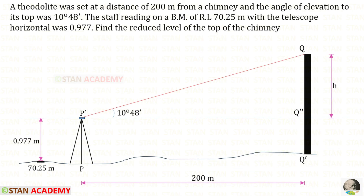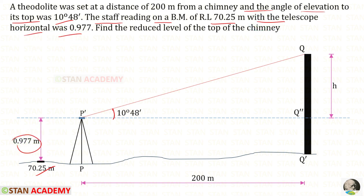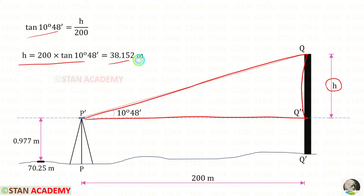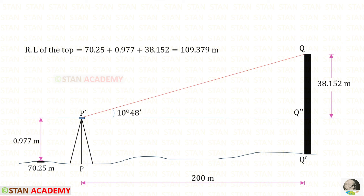Now let us see one more problem. A theodolite was set at a distance of 200 meters from a chimney, and the angle of elevation to its top was 10 degrees 48 minutes. The staff reading on a benchmark of reduced level 70.25 meters with the telescope horizontal was 0.977 meters. Find the reduced level of the top of the chimney. Taking the triangle and using the tan theta formula, we find H equals 38.152 meters. The reduced level of the top equals the benchmark RL plus the staff reading plus H.